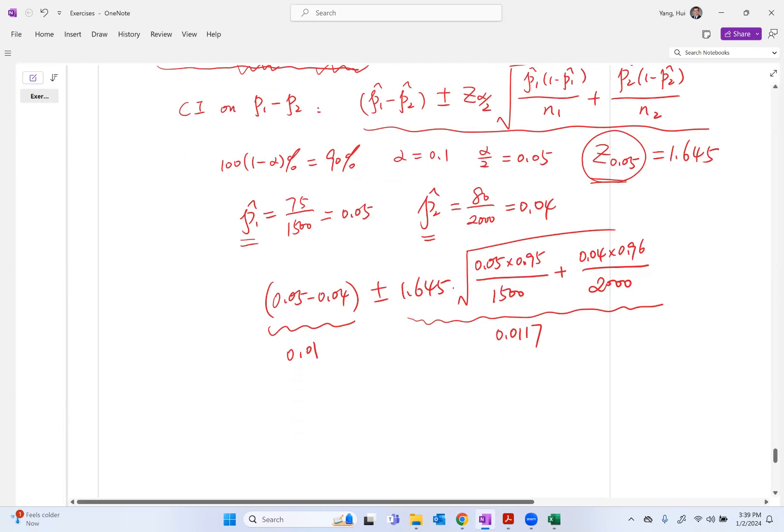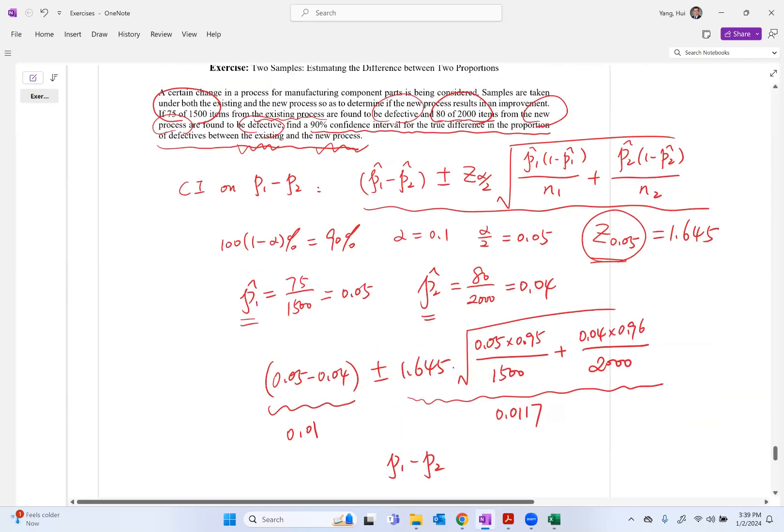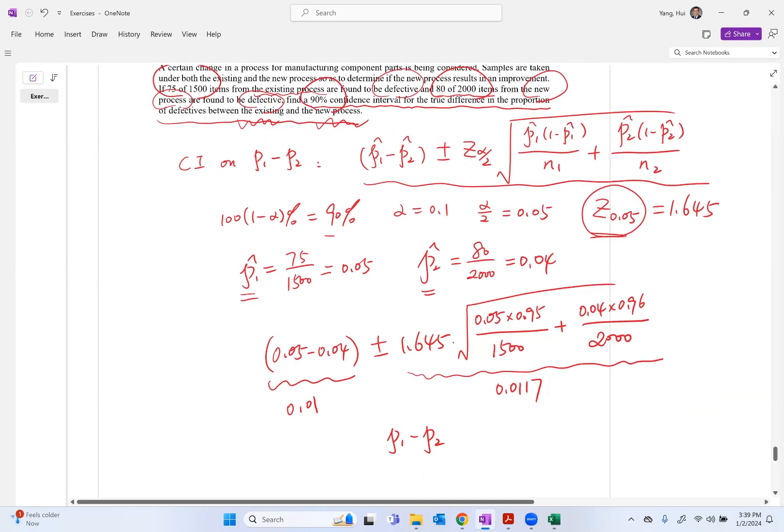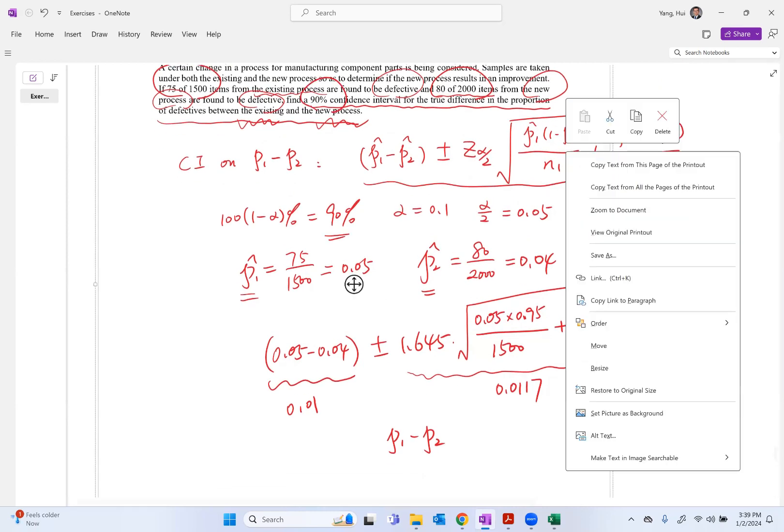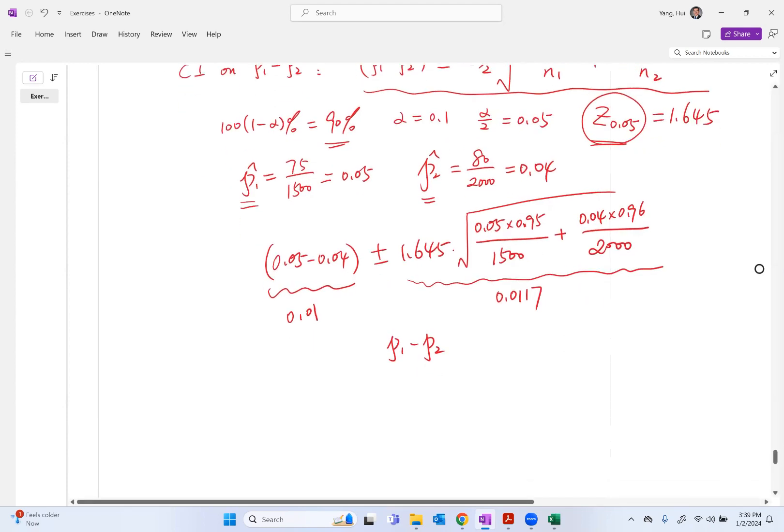So the 90% confidence interval for p1 minus p2 will become 0.01 plus 0.0117, which is less than 0.0217, and greater than minus 0.0017.